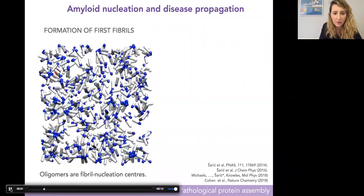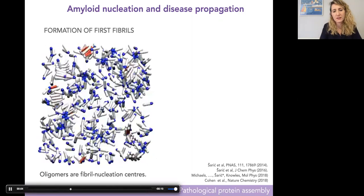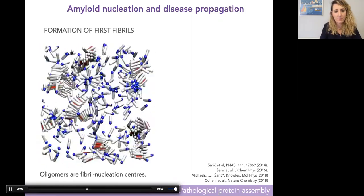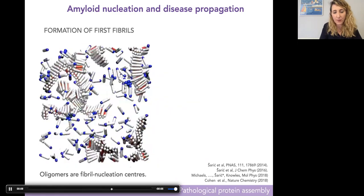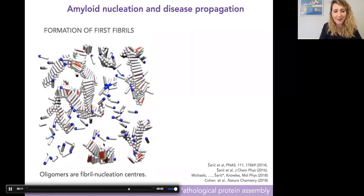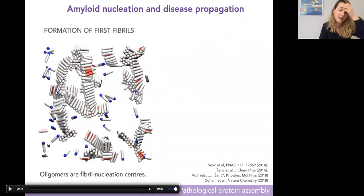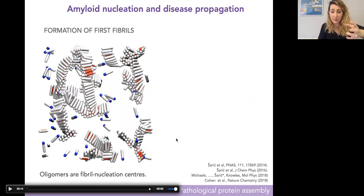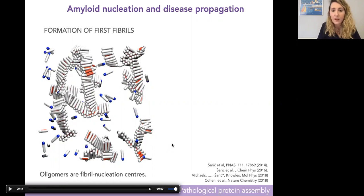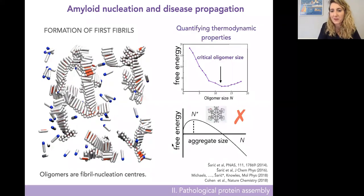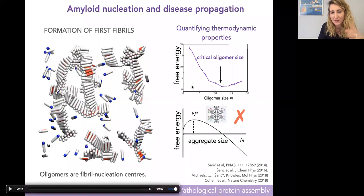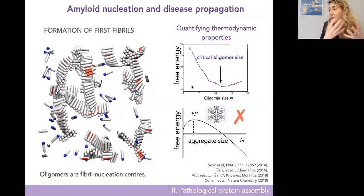They jiggle around, form oligomers, and then an oligomer turns into a fibril that keeps on growing — this is your plaque developing. We've shown that these oligomers are actually nucleation centers for fibrils, which is especially important at low concentrations — and these proteins are in nanomolar concentrations in cells. For soft matter enthusiasts, the free energy profile for this nucleation, where a disordered droplet forms, has a very different shape than classical nucleation of crystals or ice.